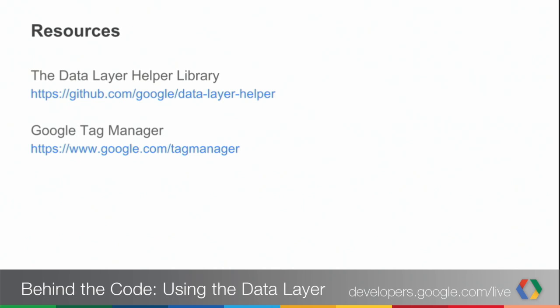For resources: if you want to check out the data layer helper library — the open source library on GitHub — we have a link for you. This would be for other vendors who might want to consume data from the data layer. It's open source and we expect it to be collaborative, so if anyone wants to contribute, please let us know. Tag Manager works very well with the data layer, and you can implement many other vendors' tags through GTM — check it out at google.com/tagmanager. Brian and Lucas, thank you so much for joining us, and we'll see you next time.